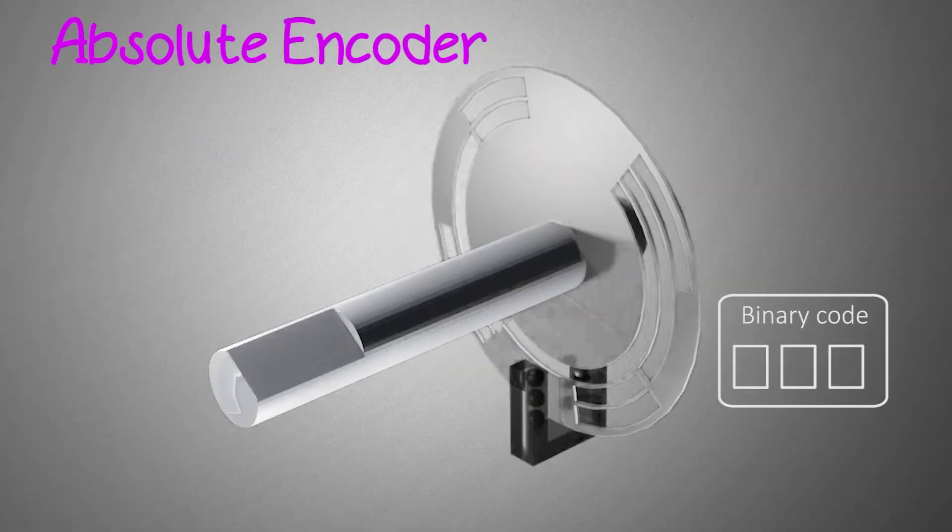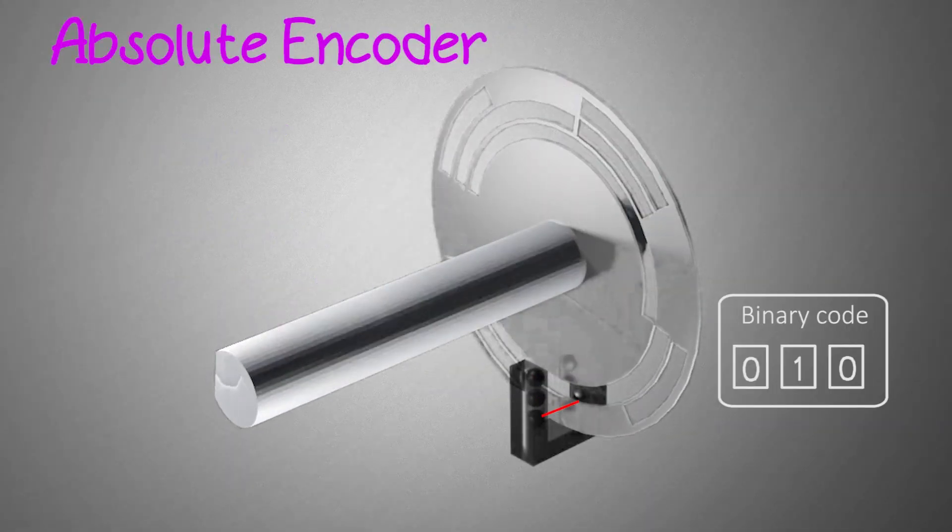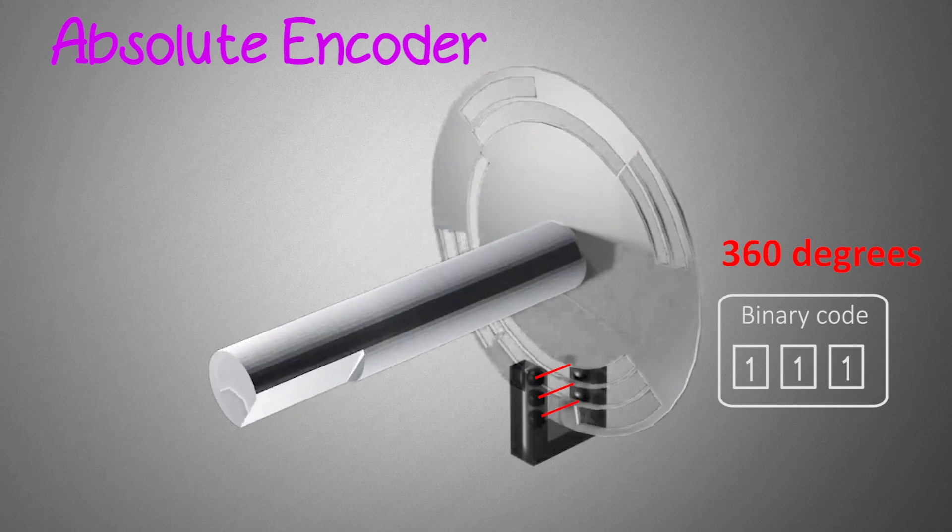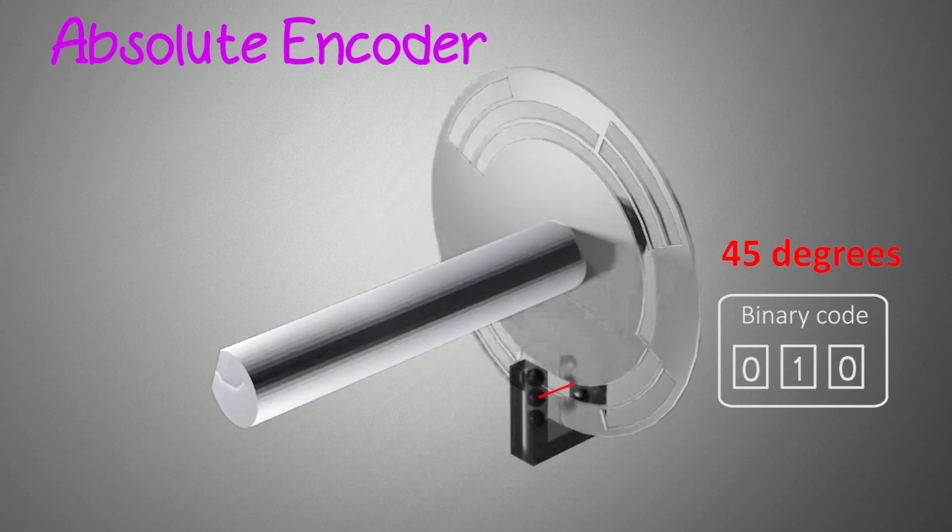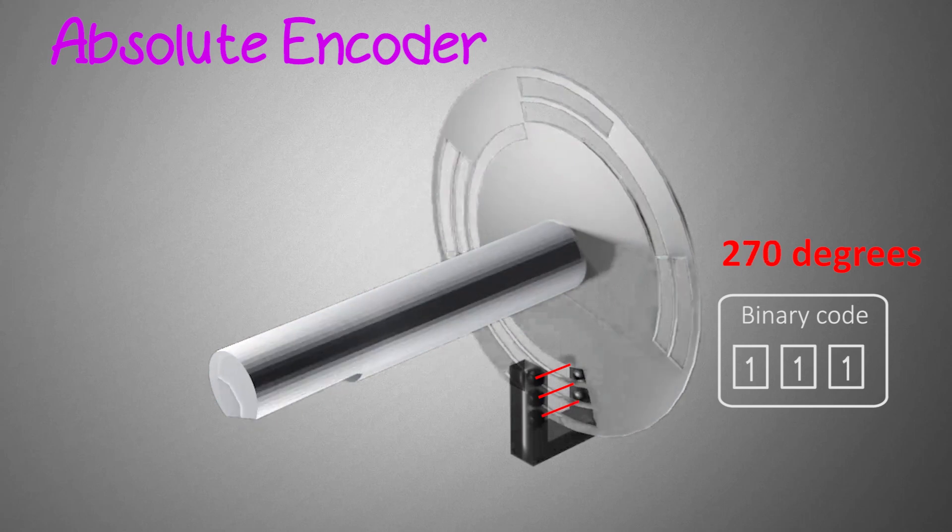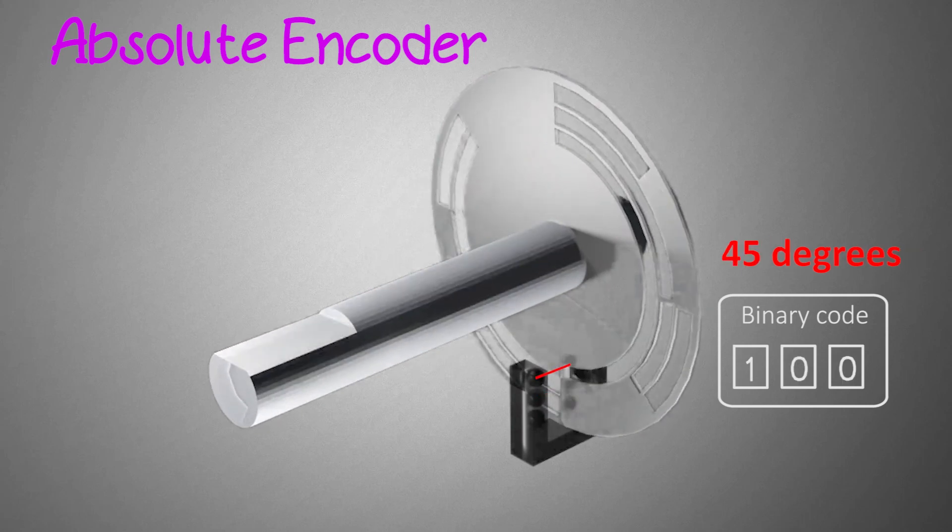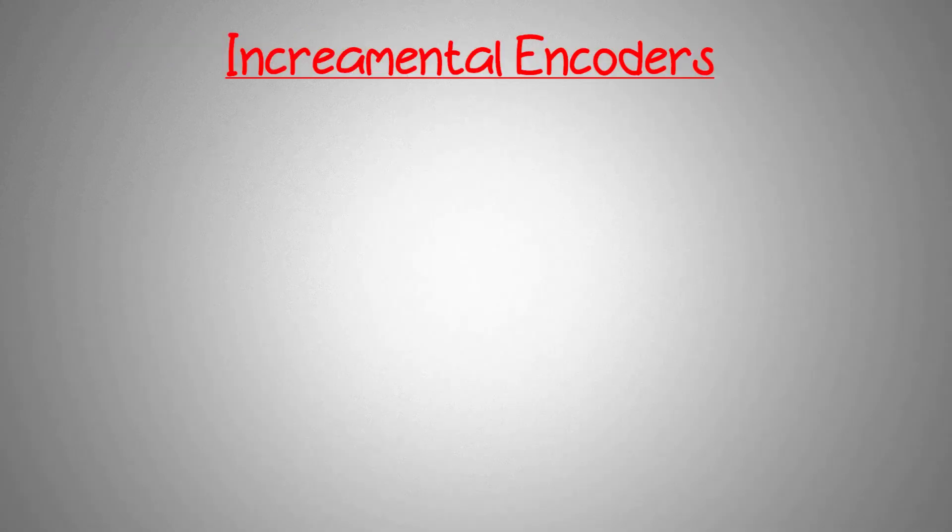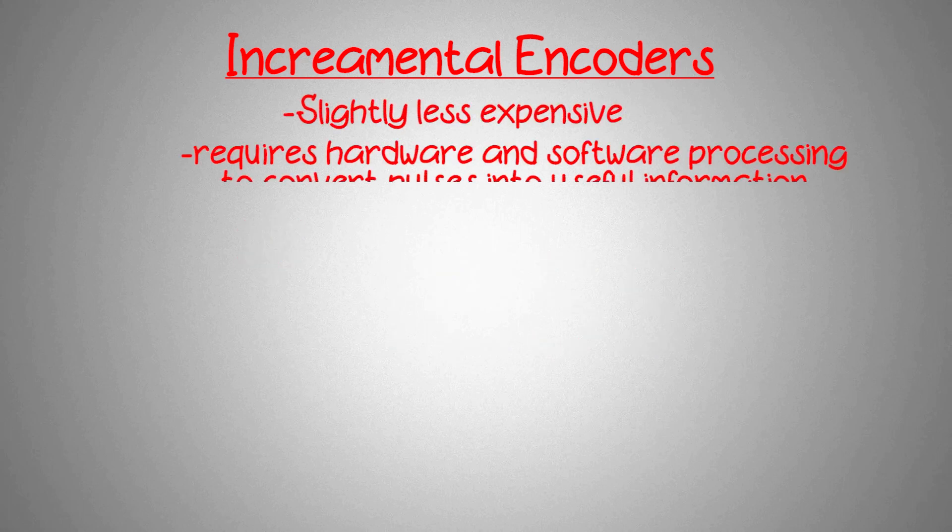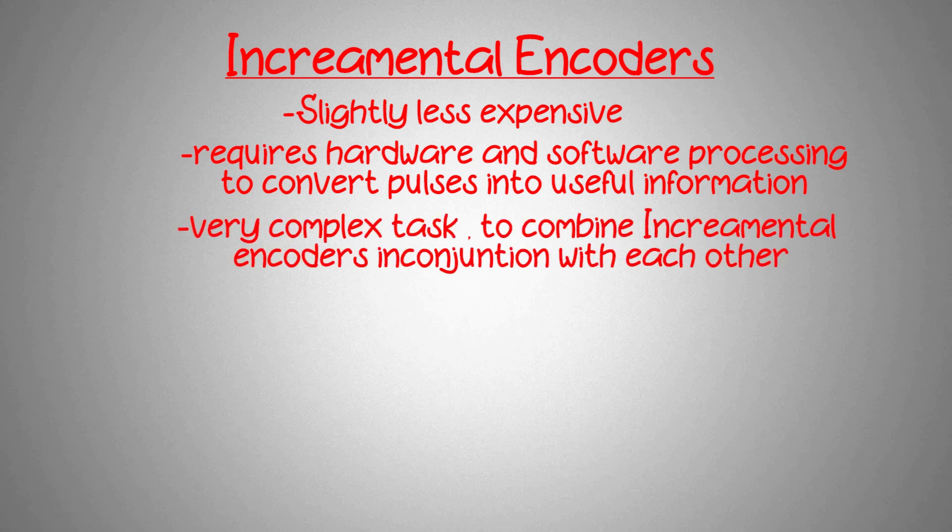The difference though is that the positions of the absolute encoders are each unique, and with a simple calculation you can convert the binary position value to an actual angle in degrees. Incremental encoders are slightly expensive and also require the hardware and software processing to convert the pulses into some useful information. This adds more complexity as we combine the encoders in conjunction with each other. It's much easier to combine absolute encoders into the system.